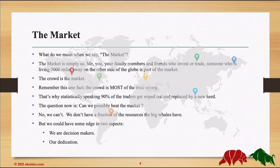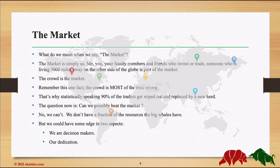Remember this one fact: the crowd is most of the time wrong. That's why, statistically speaking, 90% of traders get wiped out and replaced by a new herd. And now the question is, can we possibly beat the market? The answer is simple — no, we can't. We don't have a fraction of the resources the big whales and the market makers have. So now you might ask, if this is a dead end, why do we even trade?